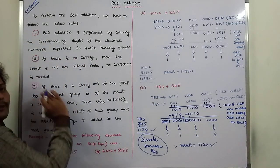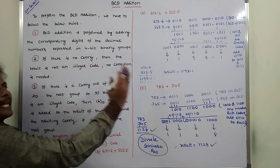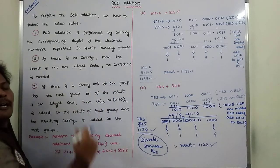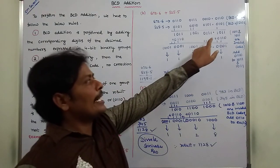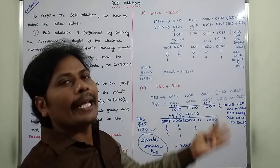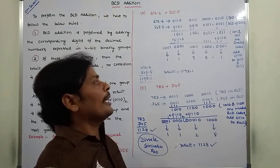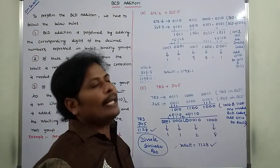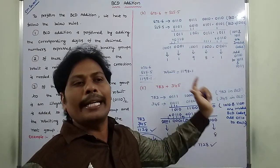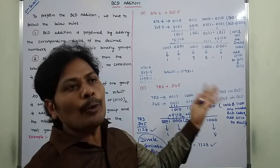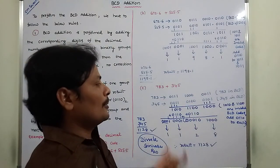To summarize: if any carry is generated, that carry is forwarded to the next higher 4-bit binary group. If any valid codes are there, we do not add decimal 6 (0110). If any illegal codes are present, we must convert the illegal BCD code into a valid BCD code by adding 0110.